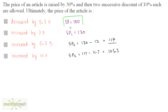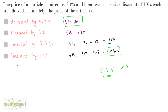The original price was 100 and the new price is 105.3, so there is an increase of 5.3 rupees. Since the base was 100, this represents an increase of 5.3%. The answer is option C.